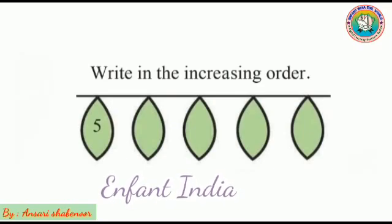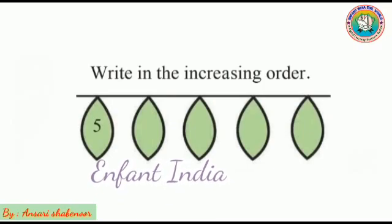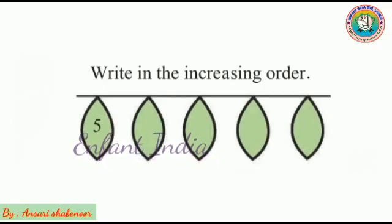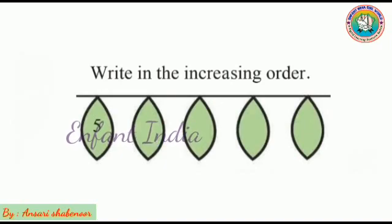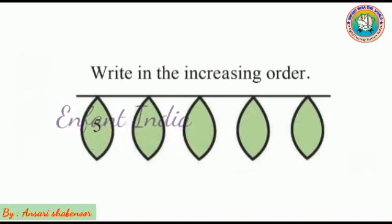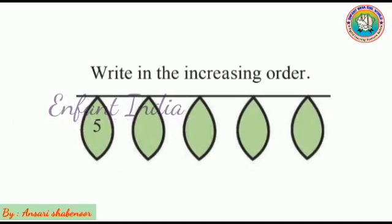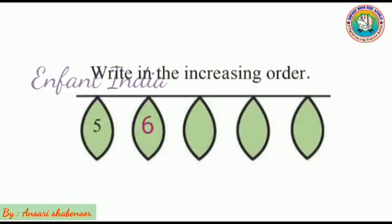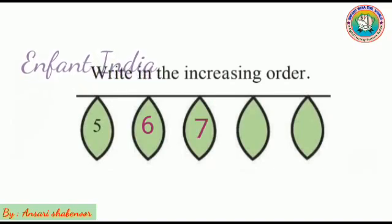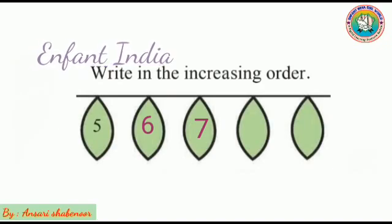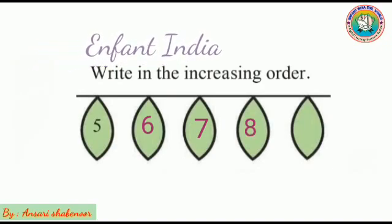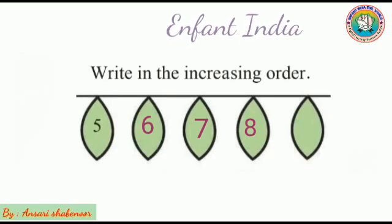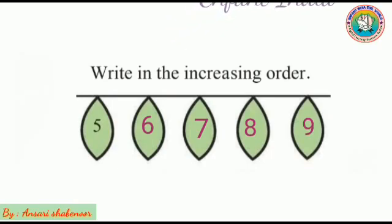Now children, look at here. Question: write in the increasing order. What to do? Write the numbers in increasing order. Increasing order means small to big. So here is the number 5. After what comes? Very good, number 6, then number 7, then number 8, and after number 8 what comes? Very good, number 9.